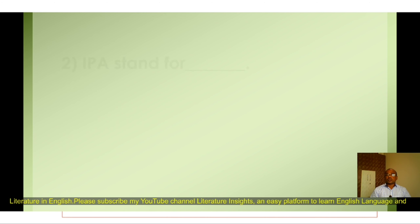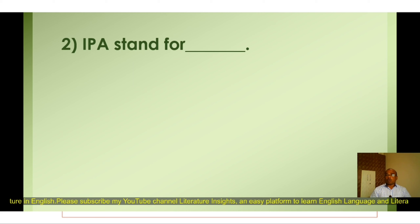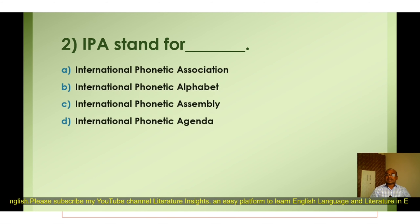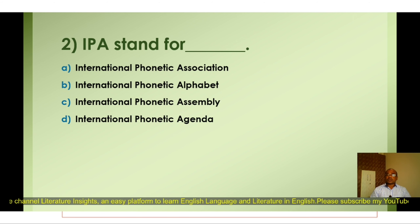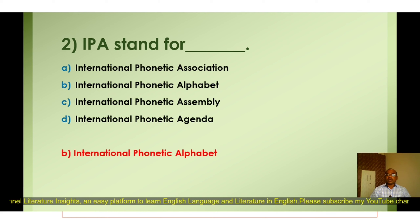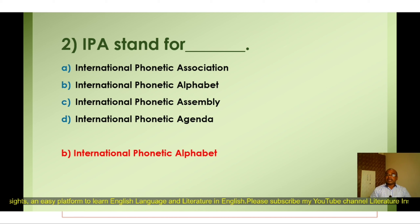Question number two: IPA stands for — A) International Phonetic Association, B) International Phonetic Alphabet, C) International Phonetic Assembly, D) International Phonetic Agenda. The correct option is B) International Phonetic Alphabet. The International Phonetic Alphabet was invented in 1888 in England to show the corresponding relationship between speech sounds.